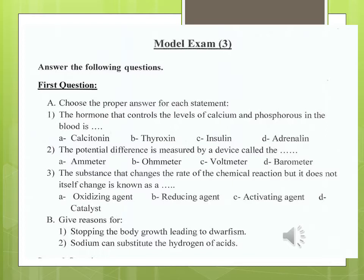The hormone that controls the level of calcium and phosphorus in the blood is calcitonin hormone.